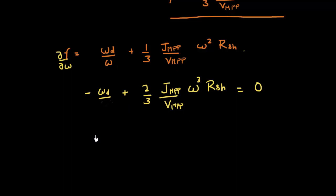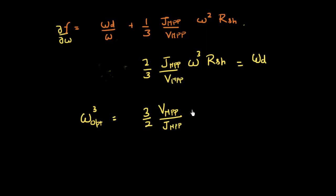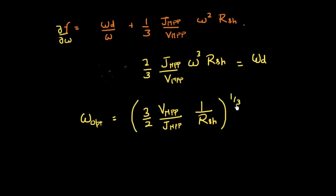If I take W_D to the other side of the equation as well, I get this relationship. So the width which gives me minimum power loss — my optimum width — I can see from here that the cube of the optimum width equals 3/2 times V over J, and it's inversely dependent on the sheet resistance. Taking the cube root on both sides gives me the optimal width.